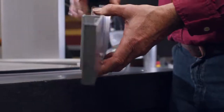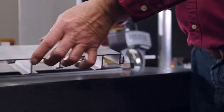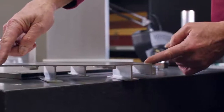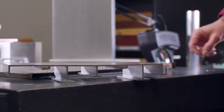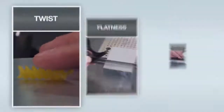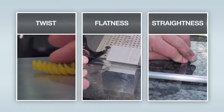To properly understand if your aluminum extrusion meets industry standards, you must be familiar with common types of extrusion flaws that may appear, such as twist, flatness, and straightness.